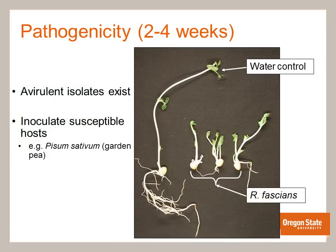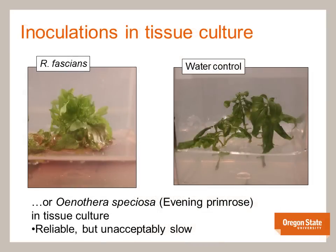Since avirulent isolates also exist, we need to test the pathogenicity of our pure isolates. Initially, we used garden pea for our inoculations. Seedlings were inoculated with a bacterial suspension of around 10 to the 8 colony-forming units per milliliter and evaluated for stunting and shoot proliferation after 2 to 4 weeks. Another indicator host which works well for pathogenicity testing is evening primrose. Potted plants were inoculated in a greenhouse, but we later switched to tissue culture plants since shoot proliferation and leafy galls showed up earlier, starting at about 2 weeks post-inoculation.